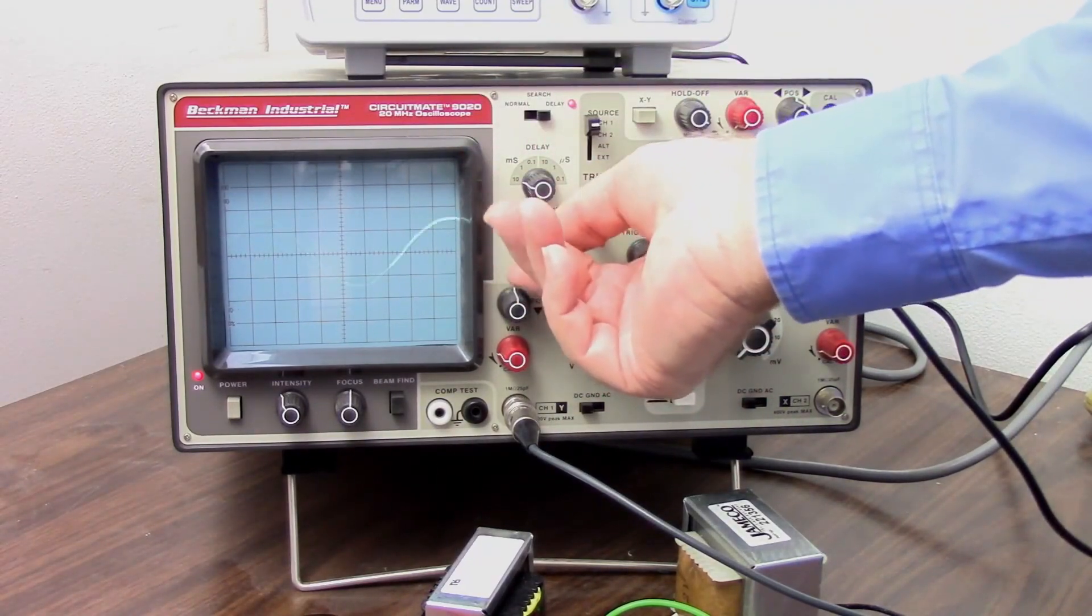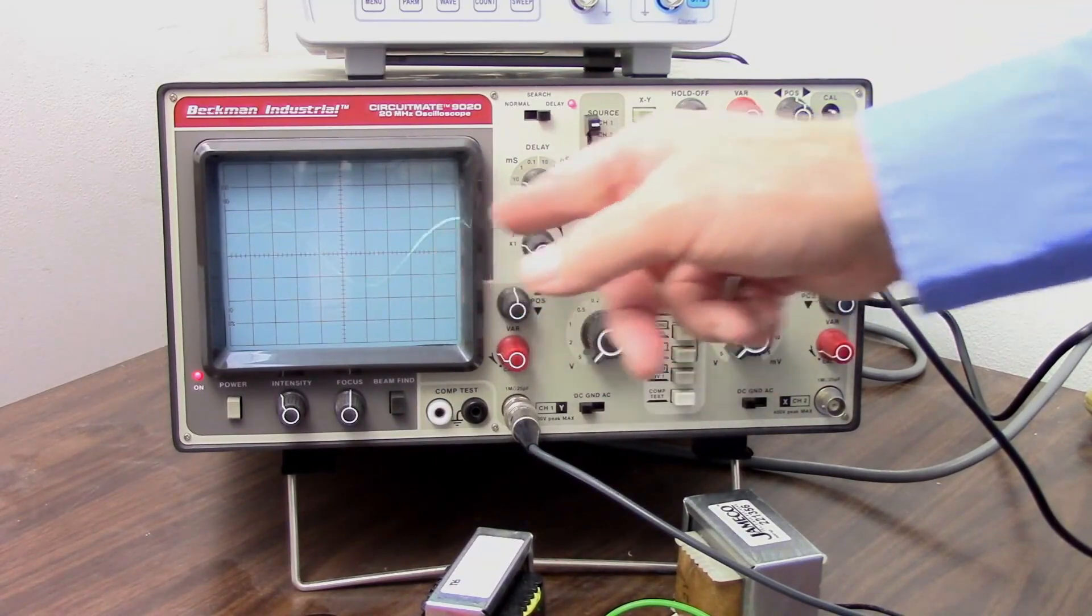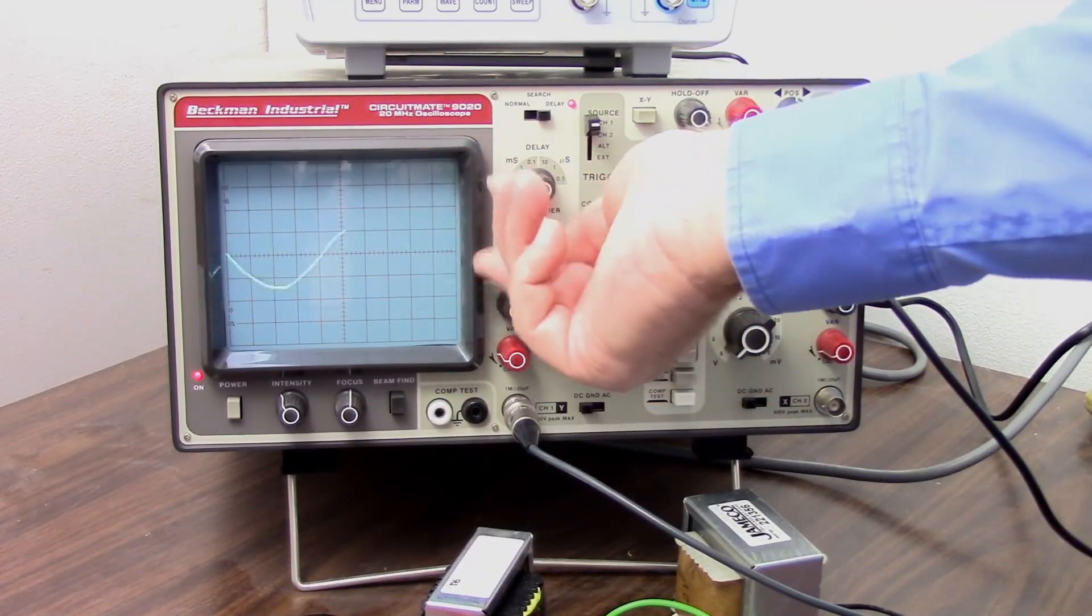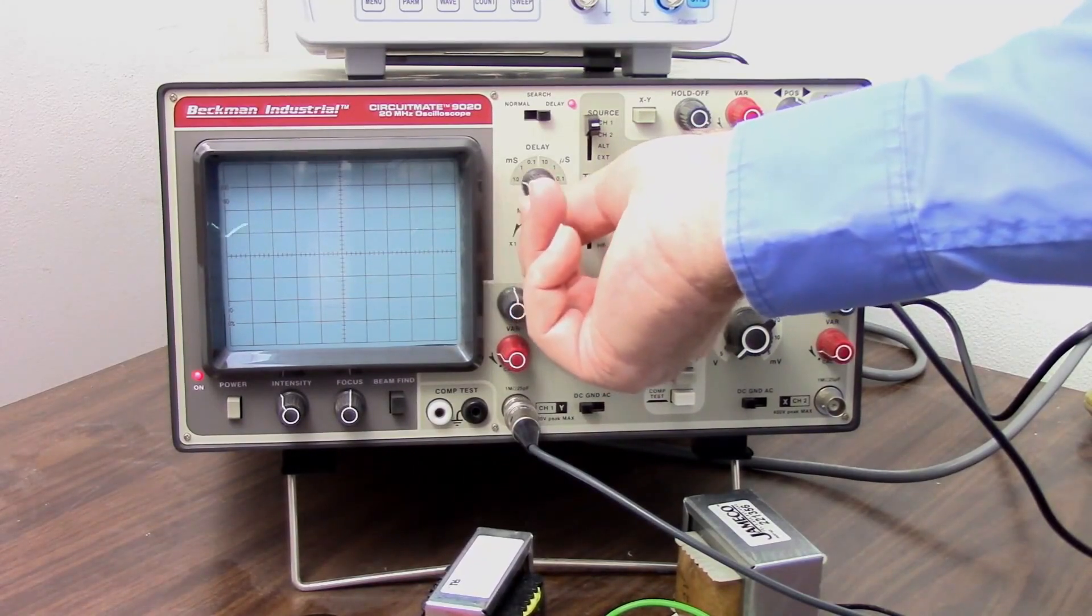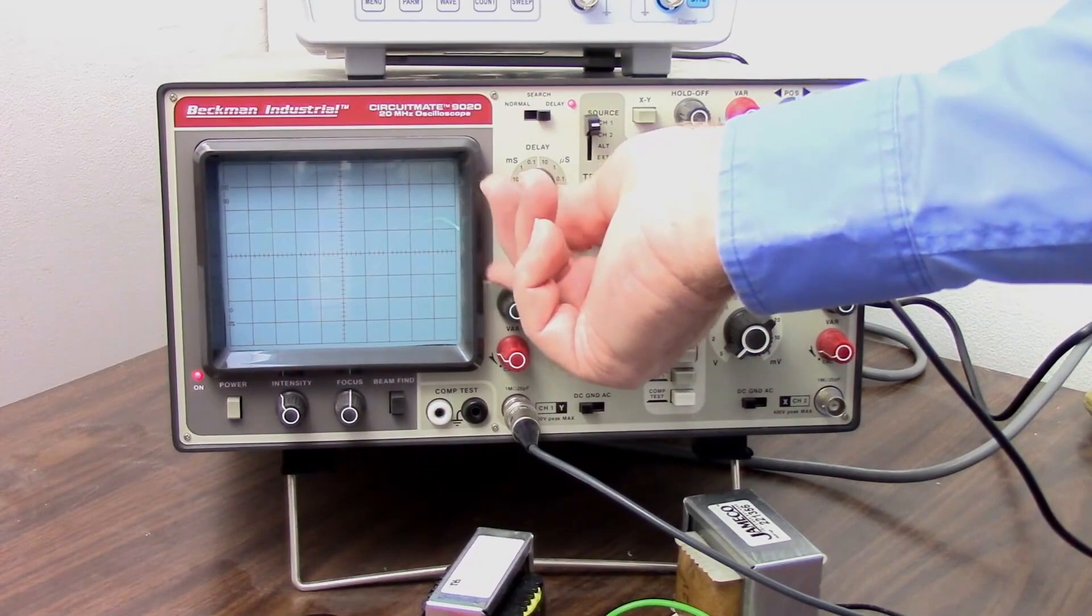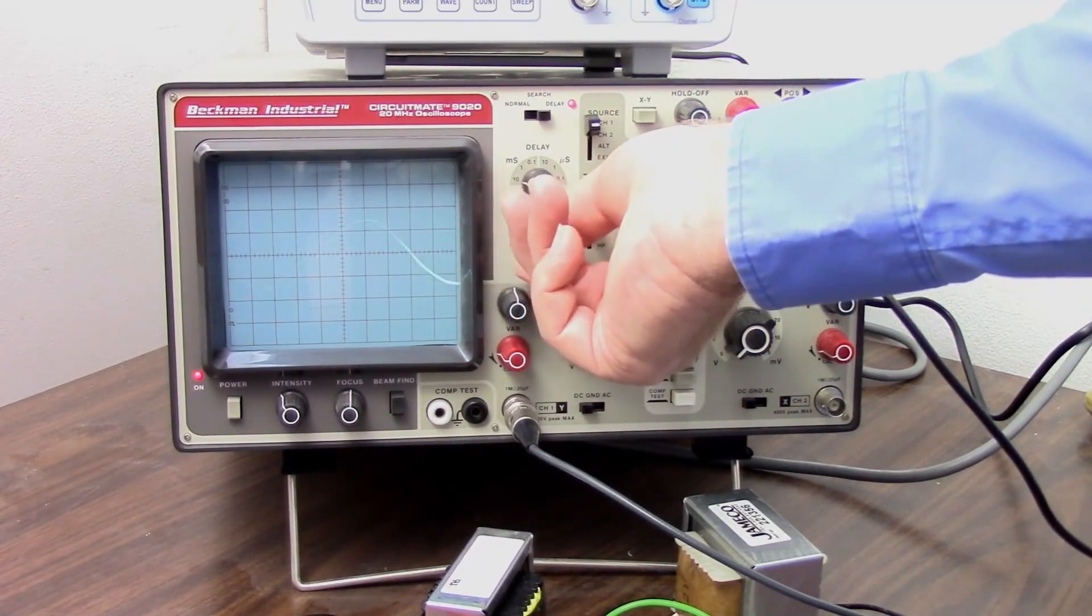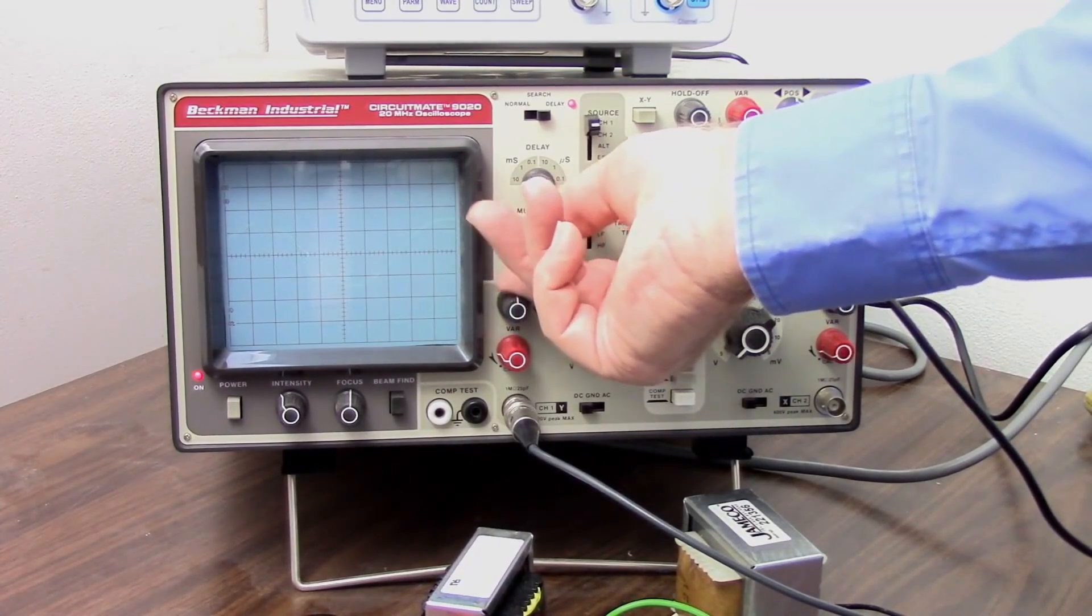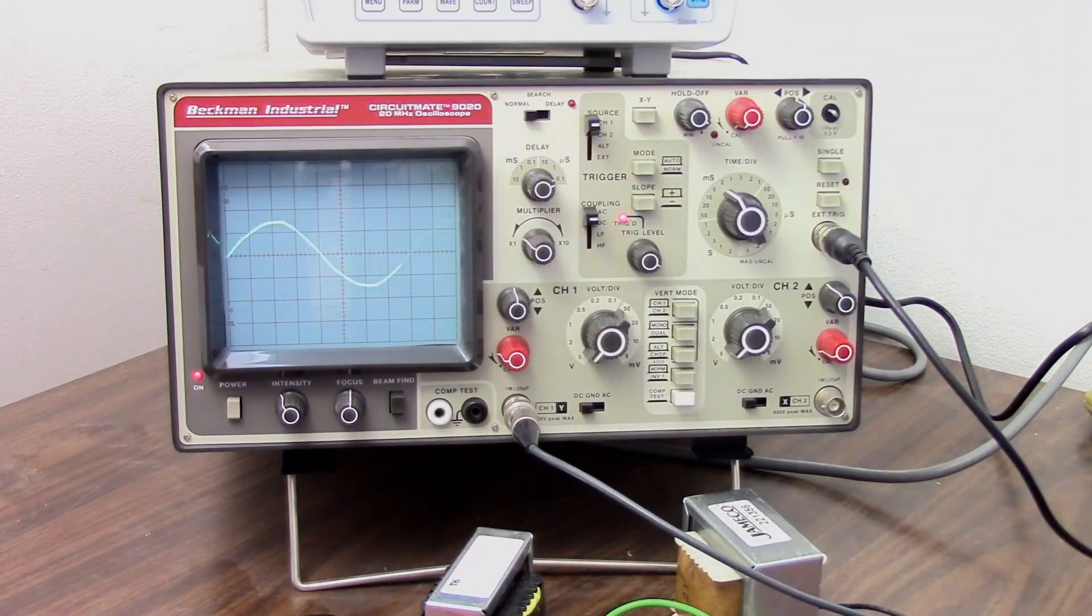So just imagine that if something is happening too late for you to see, you can adjust this and go further and further down the wave until you can see whatever that anomaly is. Just don't have anything to show you at this point. But that's how the sweep delay works. And last but not least, I'm going to try before your very eyes a function of this scope that I've never tried. And that is the component test.